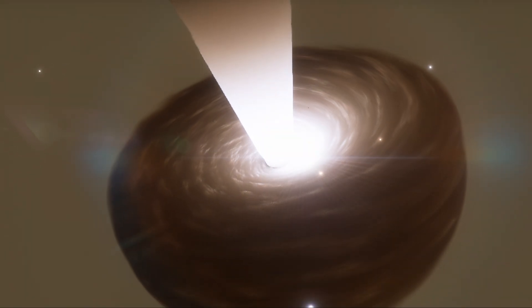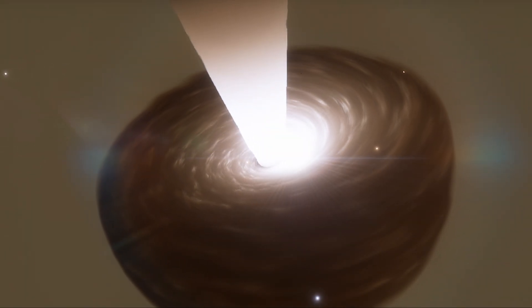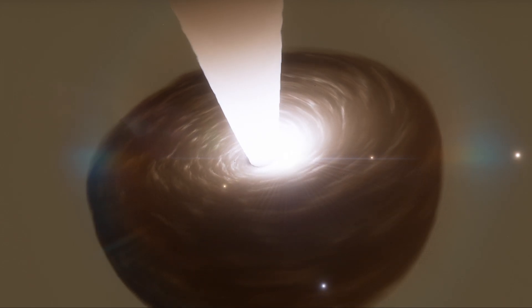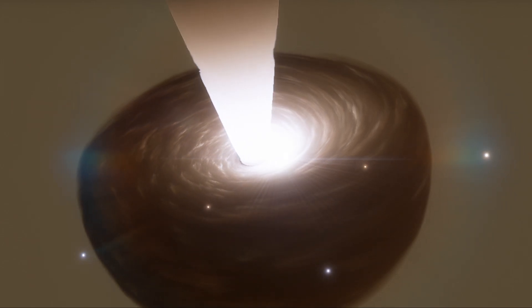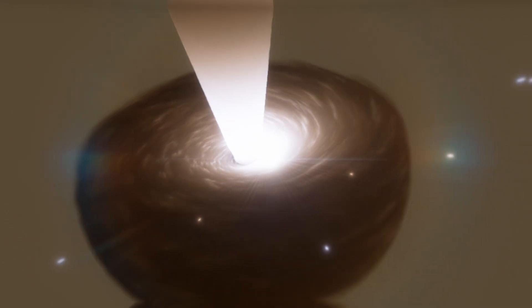Accretion occurs when matter, such as gas or dust, is pulled toward the black hole by its immense gravitational force. As this matter gets closer to the black hole, it heats up and emits radiation, which can be observed by telescopes.